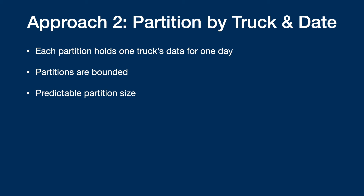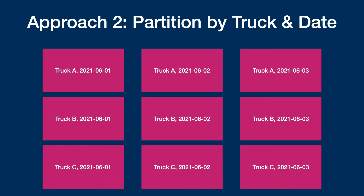To query multiple days worth of data, you can make concurrent queries. Remember: one query should only talk to one partition. So if you want all the rows from the last three days, instead of writing one query that talks to all three partitions, you want to write three separate queries — one for each day — and kick them off concurrently.